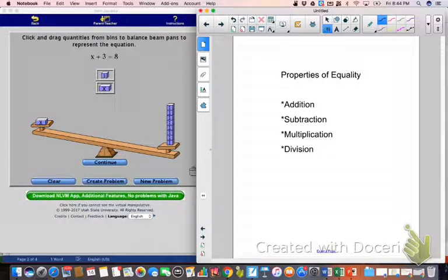Because right now, I subtracted 3 from one side of my balance beam, and now it's out of whack. Because I did not subtract 3 from both sides of the balance beam. This would be an example, what we're doing right now, of the subtraction property of equality.